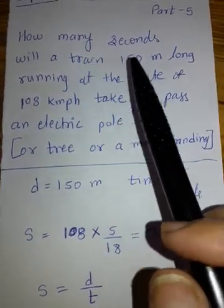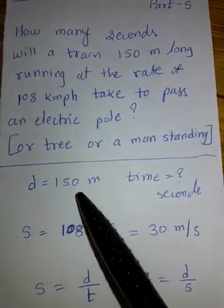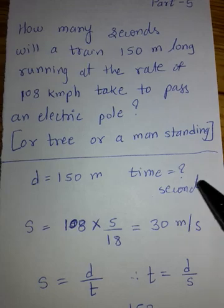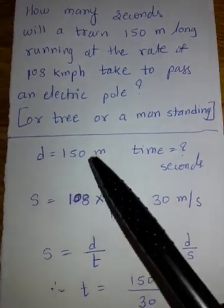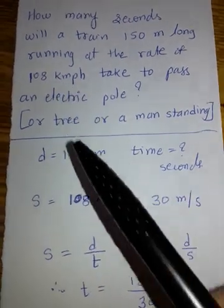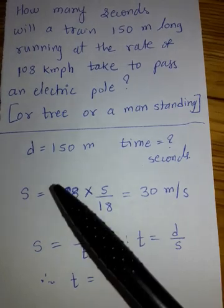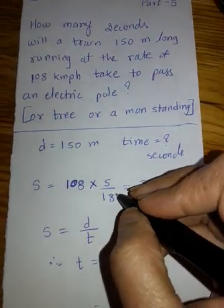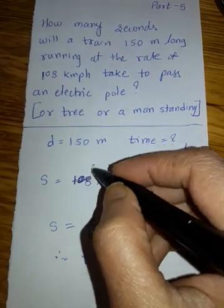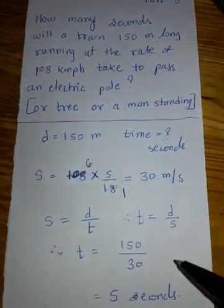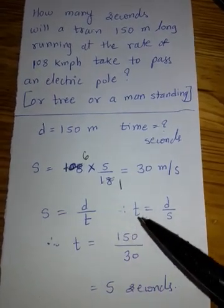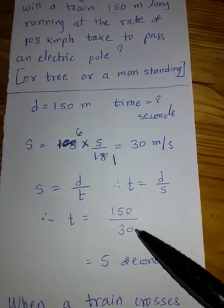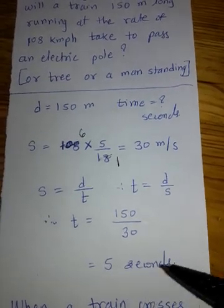So we just now saw: when a train passes a pole, the distance travelled by it is equal to its length — its own length. Here they have mentioned the length of the train is 150 meters. So what is d here? Distance is 150 meters. How much time does it take? We do not know — so the question is time, in seconds. Now this is in meters and the speed is given in kilometers per hour. So first we need to convert this to meters per second by multiplying by 5 upon 18. That gives us 30 meters per second. Speed equals distance upon time, so time equals distance upon speed: 150 upon 30, that is 5 seconds. That will be your answer.